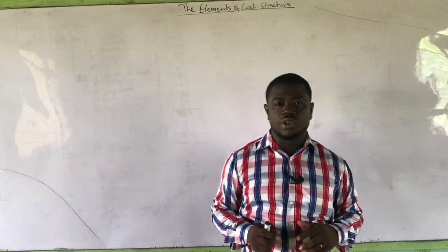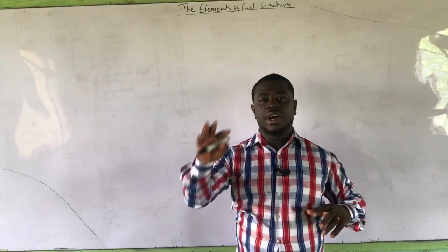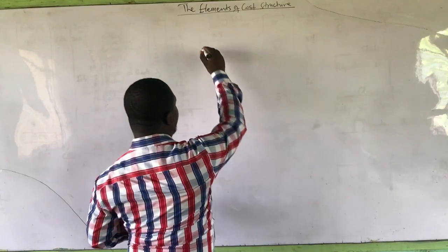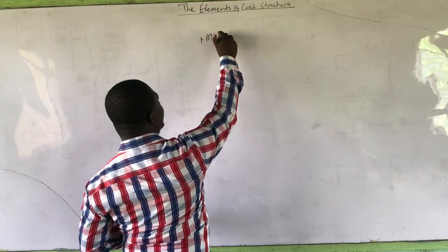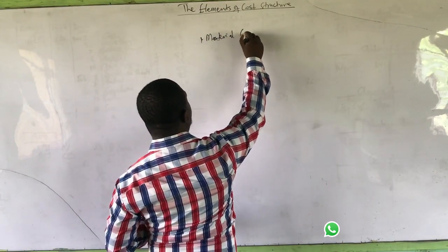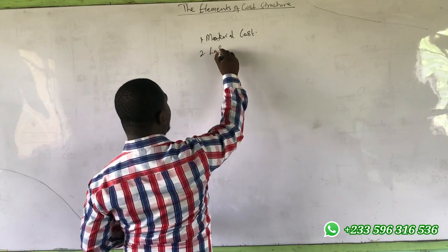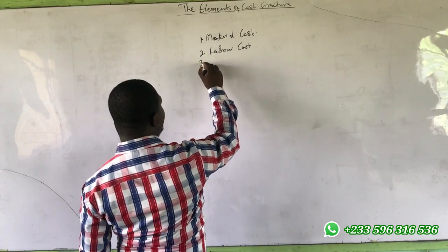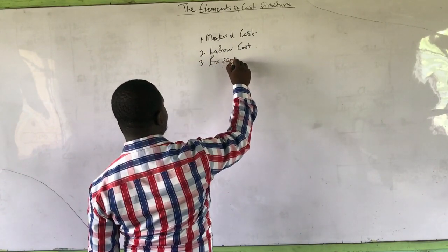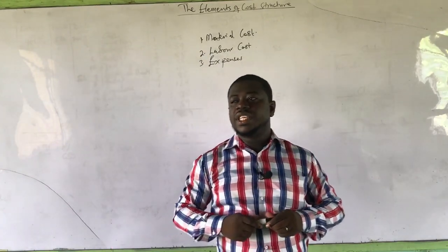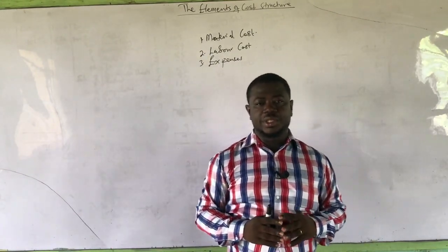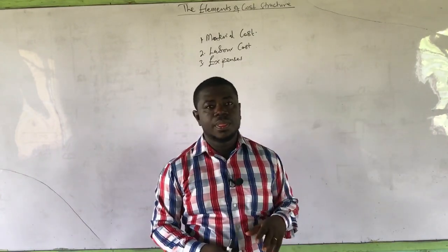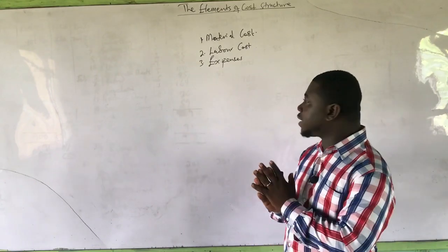When we look at the elements of cost, we have three main elements. Cost has three elements: we have material cost as the first element, we have labour cost as another element, and then we have expenses. These are the three main elements of cost — material cost, labour cost, and expenses — and we need to understand these three very well.